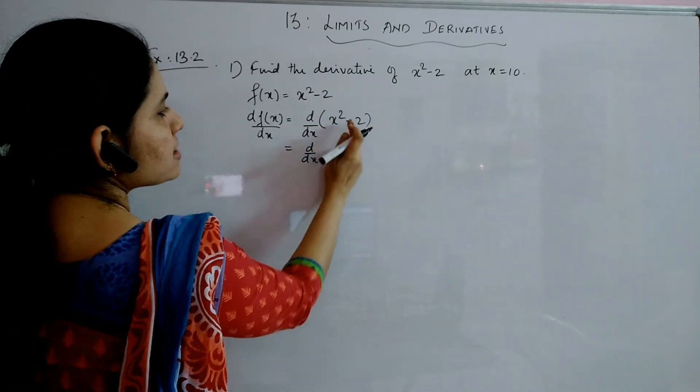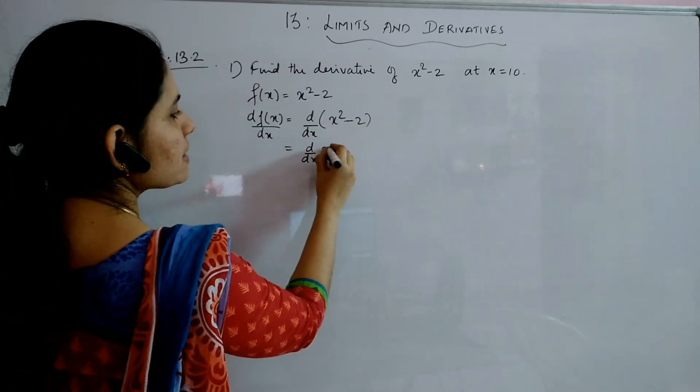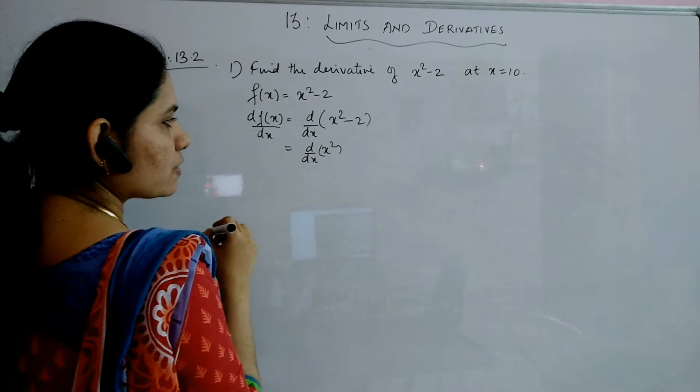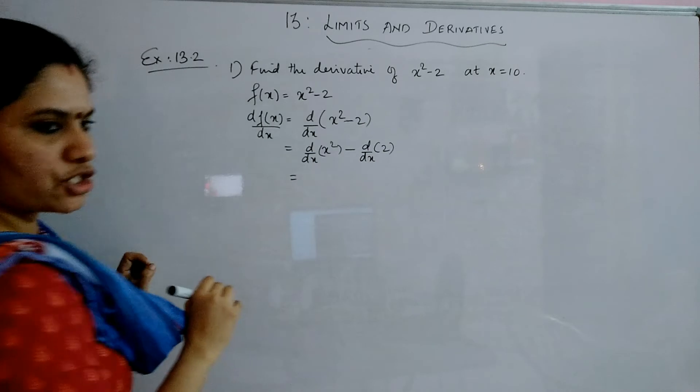Now, d by dx again. This is in between subtractions, so you can give d by dx to each term separately. So this is d by dx of x square minus d by dx of the constant 2.